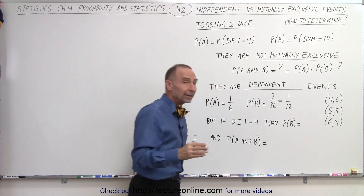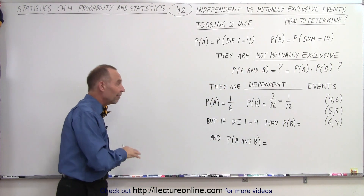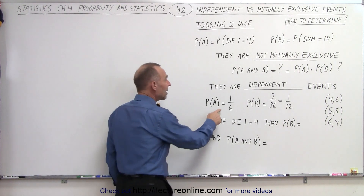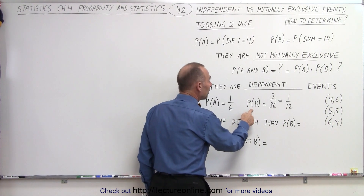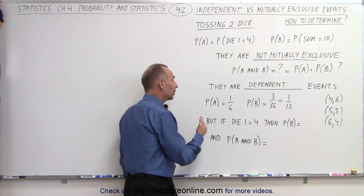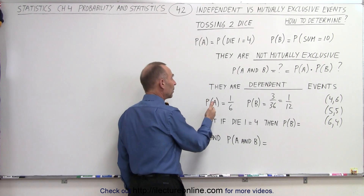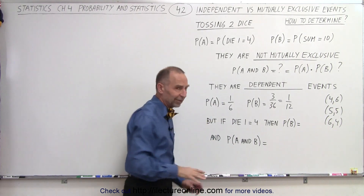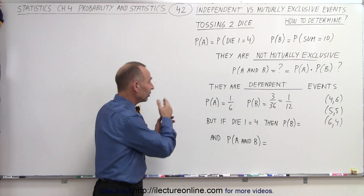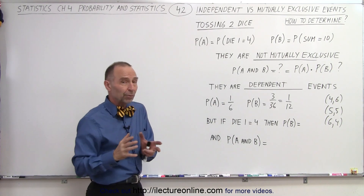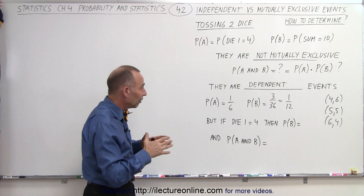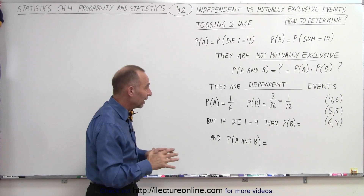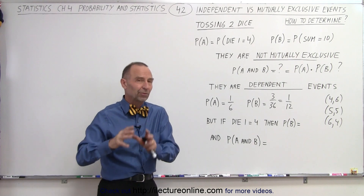They must be dependent events. That means the outcome of one must affect the outcome of the other. Once we know the outcome of A, we have a different probability for the outcome of B. For example, if the first die is a 1, then there's no possible way to get a sum of 10 for the two dice, and therefore the probability of B drops to 0.